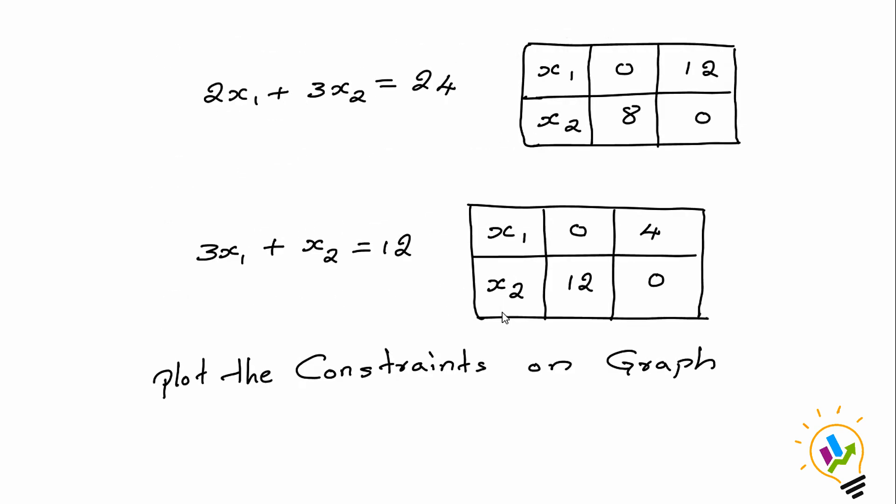In the graphical method, the constraint inequalities need to be made as equalities. Then they become lines. These lines can be plotted on the graph.